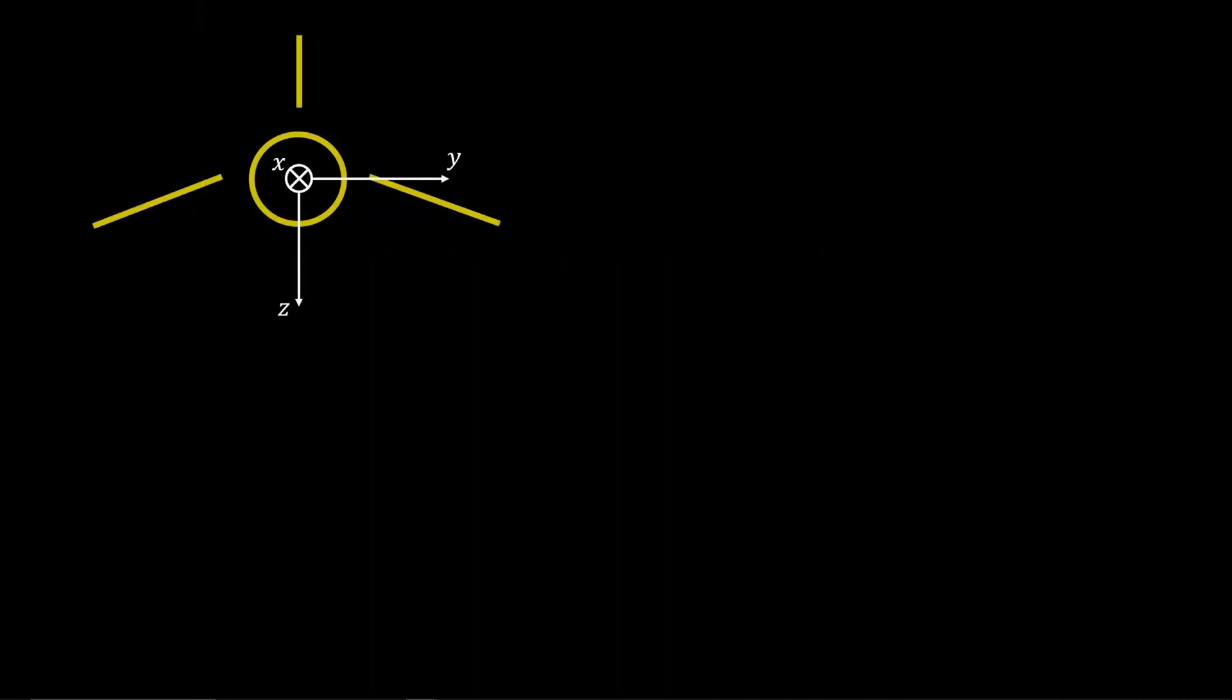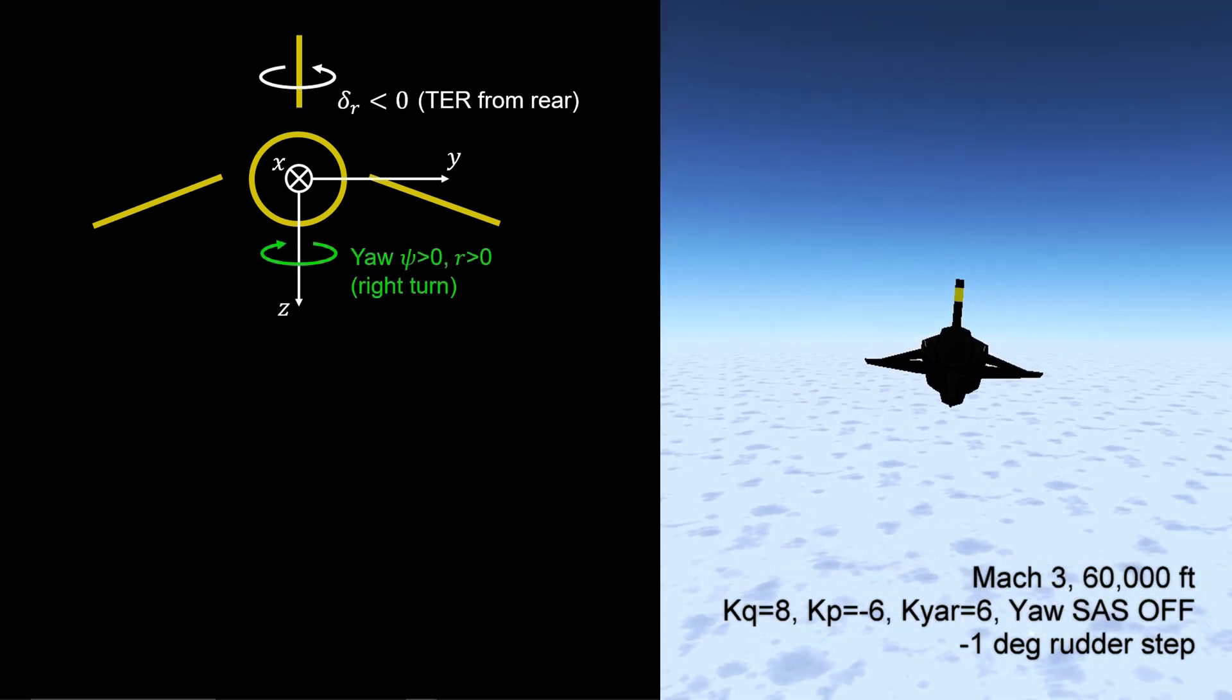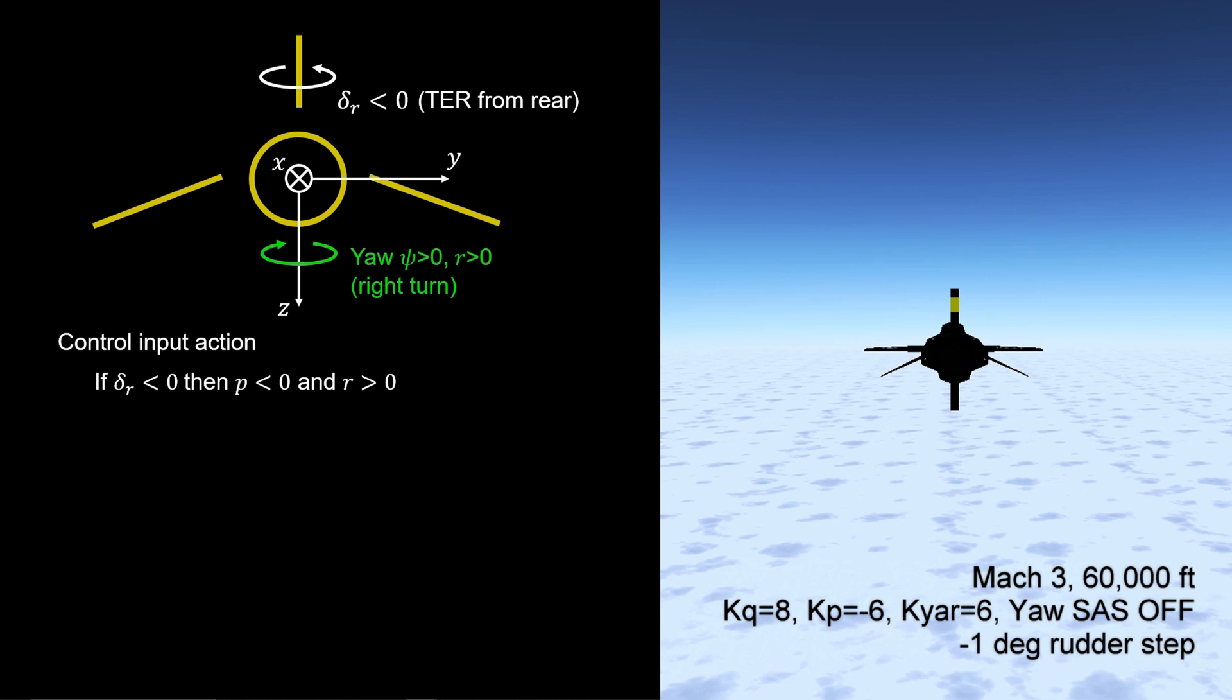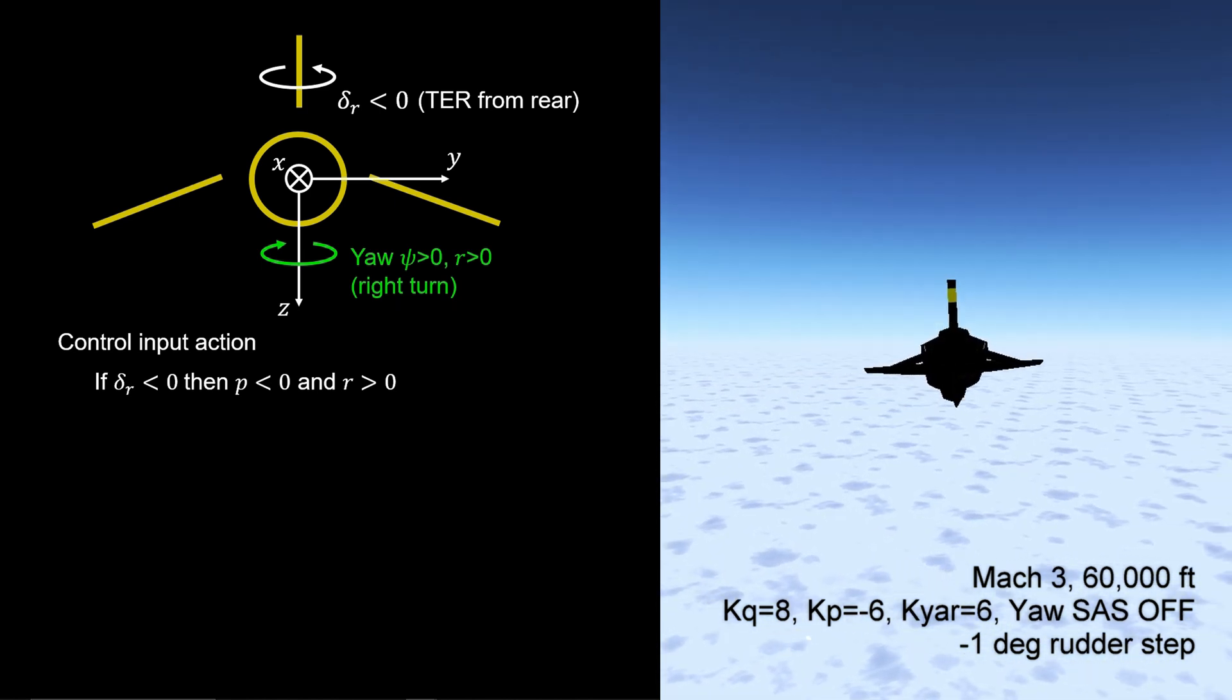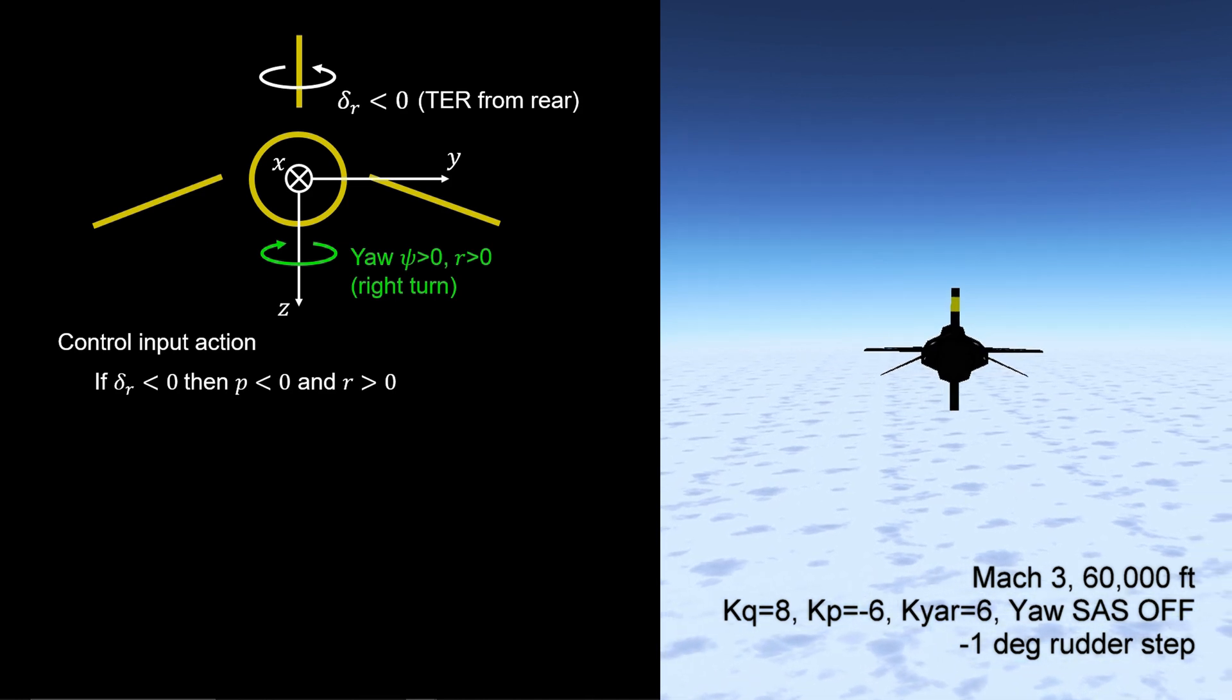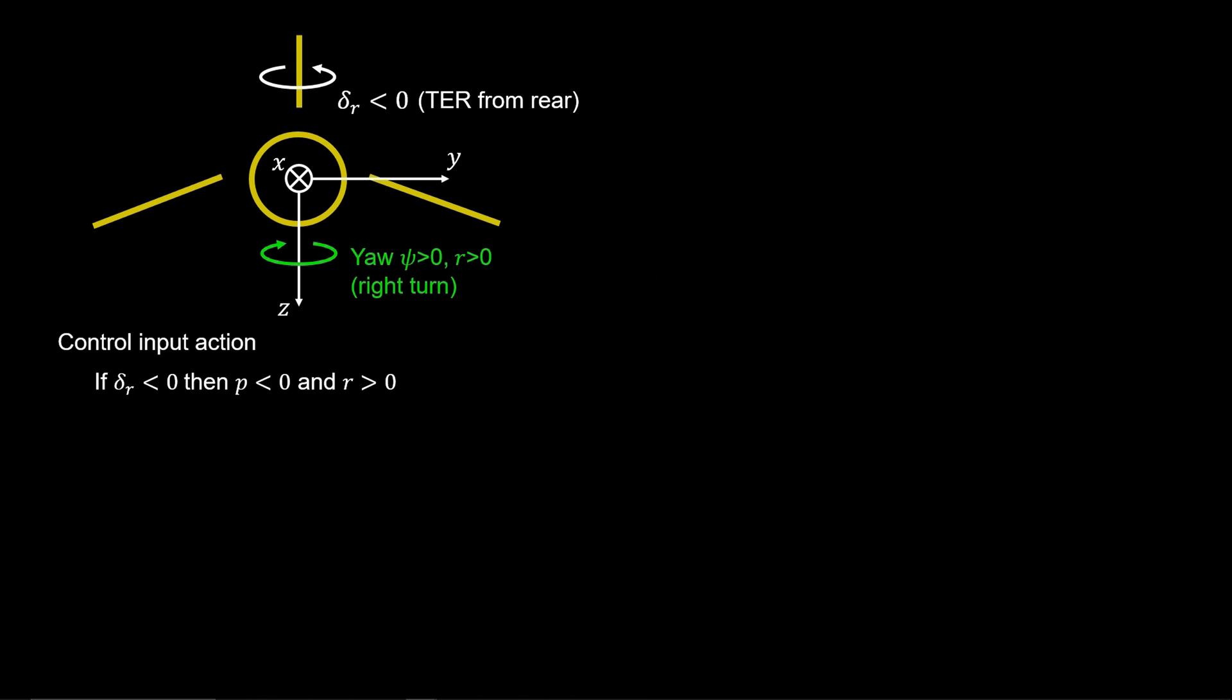As discussed for the yaw channel, negative rudder produces positive yaw, positive yaw rate. This yaw action can excite the Dutch roll mode. But here, yaw rate couples into the pitch and roll axes, so we wish to dampen yaw rate. To augment yaw stability, we note there is a reverse acting relationship between yaw rate and the rudder.